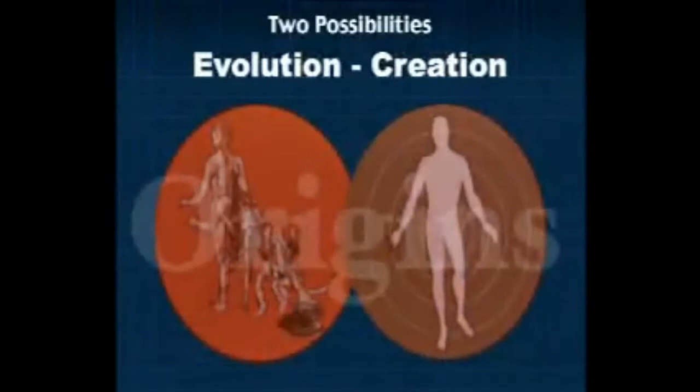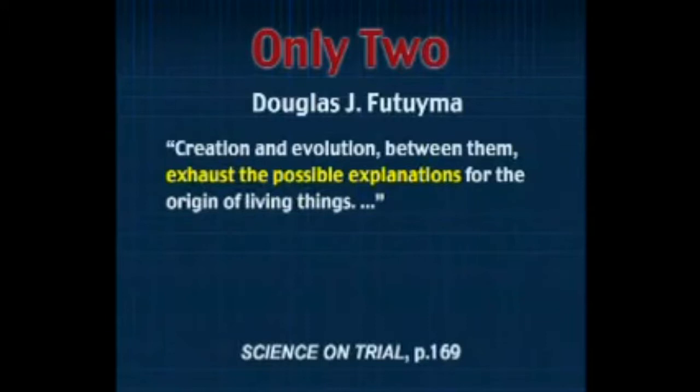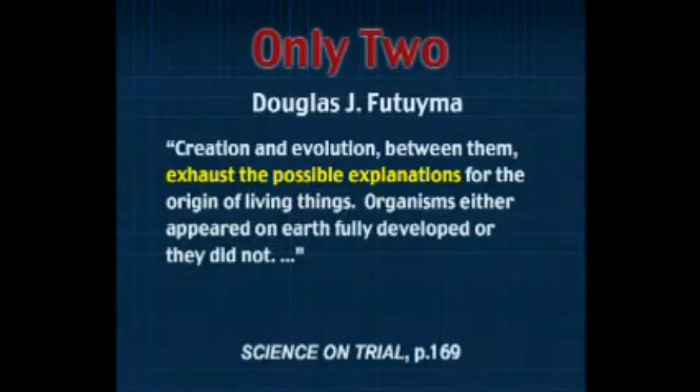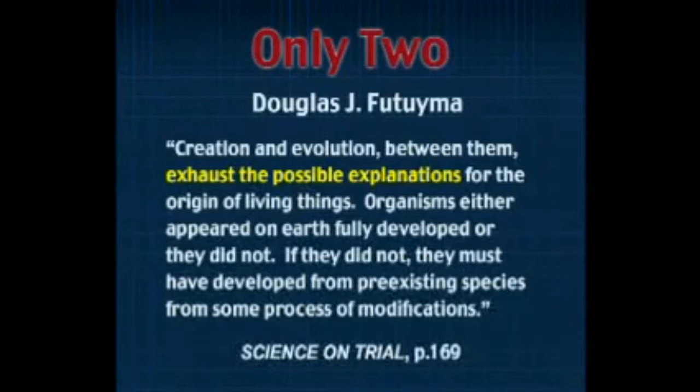As we are talking about origins, there are two possibilities and only two, and that is important for several reasons. Notice the statement by Douglas Futuyma, again a very prolific writer, but a well-known scientist. He says: creation and evolution between them exhaust the possible explanations for the origin of living things. Organisms either appeared on earth fully developed or they did not. If they did not, they must have developed from pre-existing species by some process of modification, naturally or suddenly — not natural. And there are variations of each.